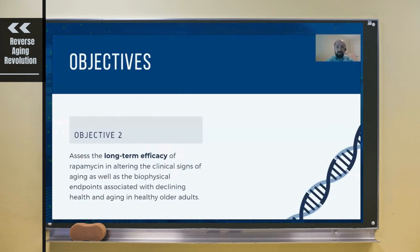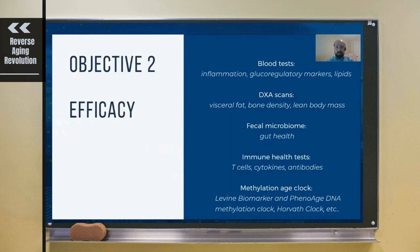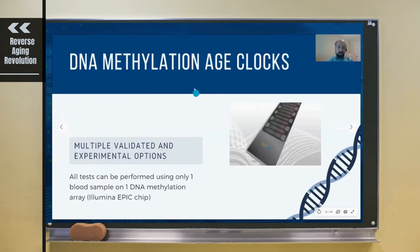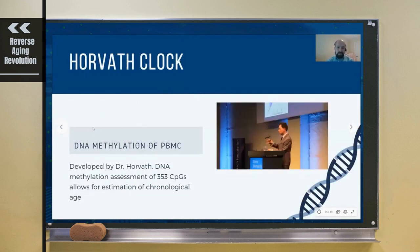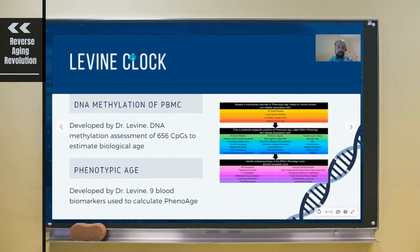There's the DNA methylation clock on the Illumina EPIC chip. Dr. Horvath is very famous for his clock using CpG methylation. Dr. Morgan Levine has come up with a way to couple DNA methylation with the blood panel and has come up with DNA-M PhenoAge, and we'll be looking to include that as well.